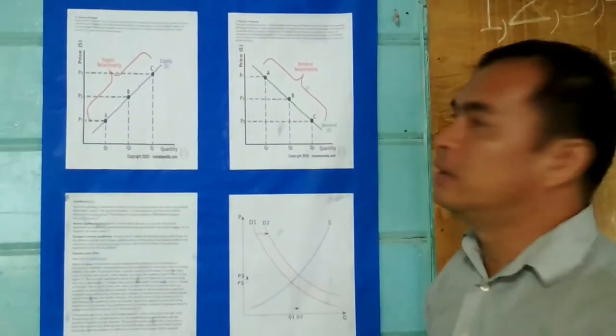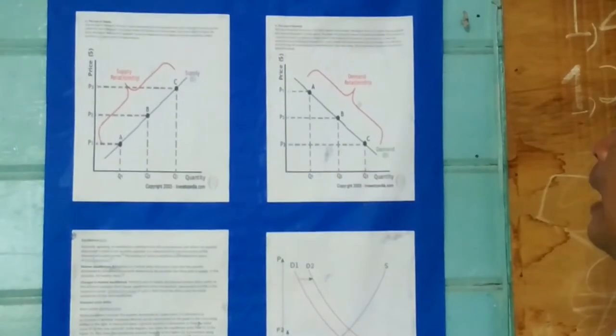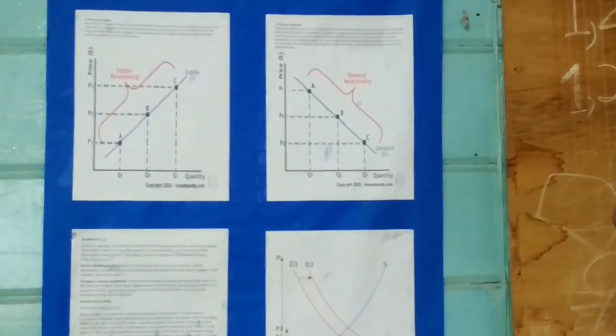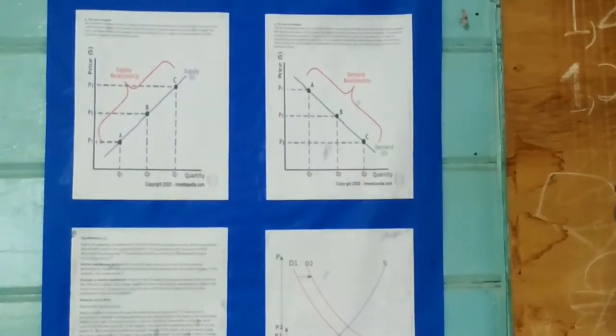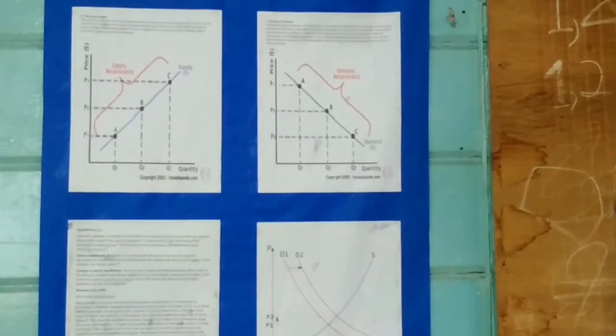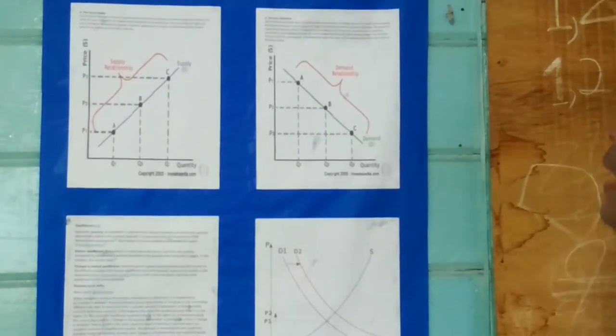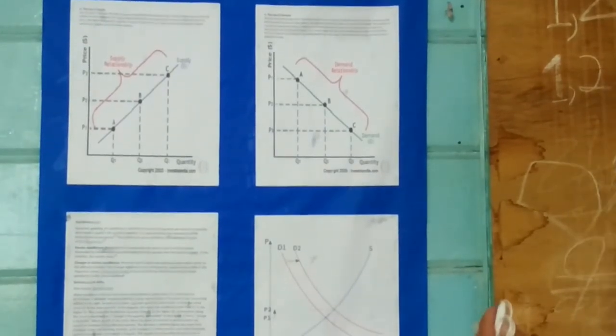Second is the law of demand. The law of demand states that if all other factors remain equal, the higher the price of a good, the less people will demand that good. In other words, the higher the price, the lower the quantity demanded. The amount of a good that buyers purchase at a higher price is less because as the price of a good goes up.